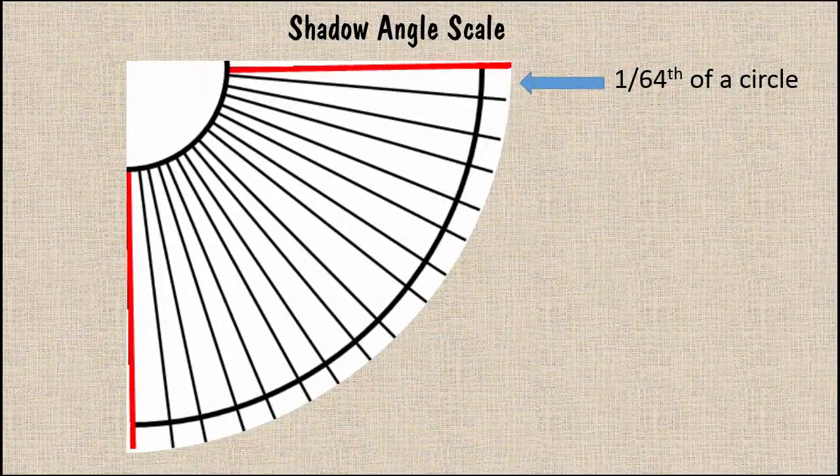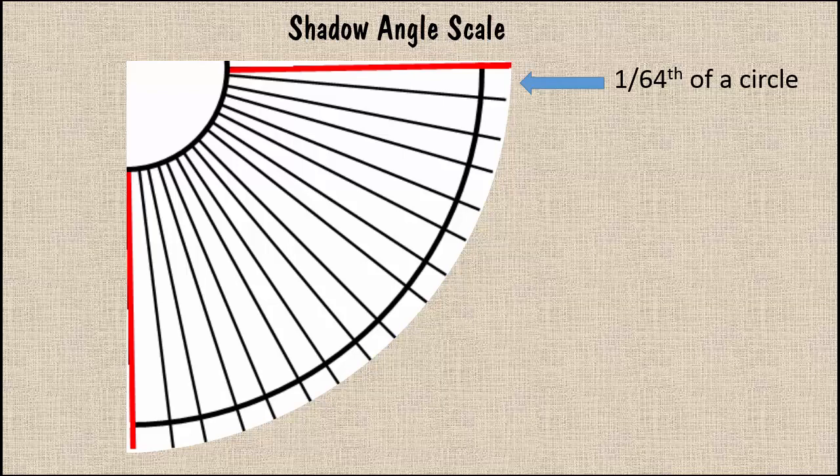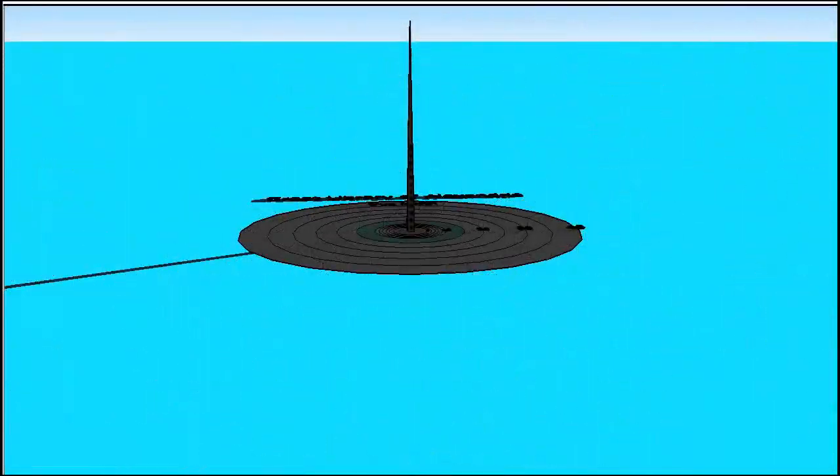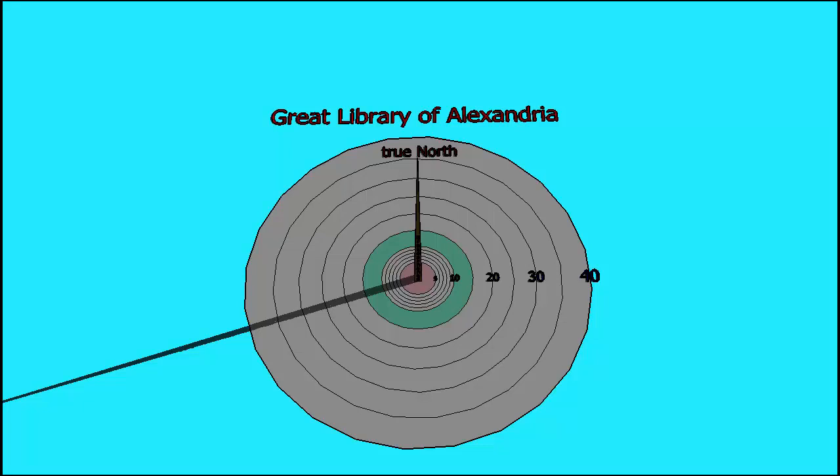Eratosthenes could have used this simple method to keep bisecting angles to smaller and smaller fractions of a full circle, producing one-half, one-quarter, one-eighth, one-sixteenth, as far as materials and eyesight allowed. He could have produced a shadow scale similar to this to measure the shadow angle or some variant of it. The details of the equipment Eratosthenes used are lost to history. But just for fun, let's do our own experiment using a tall pointy obelisk casting shadows onto circles on the ground marked in degrees. Eratosthenes did not have the degree system for angle. He would have used Egyptian units. But just for fun, let's do the experiment using modern degrees and miles.